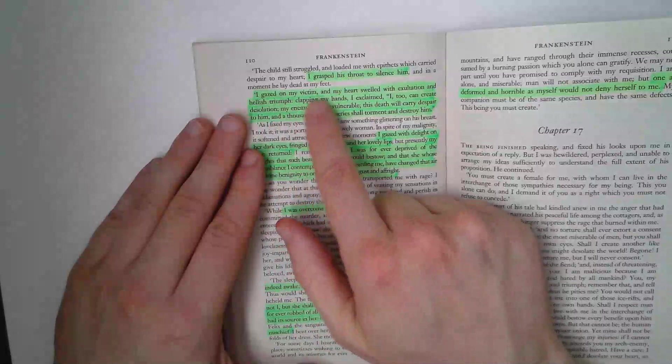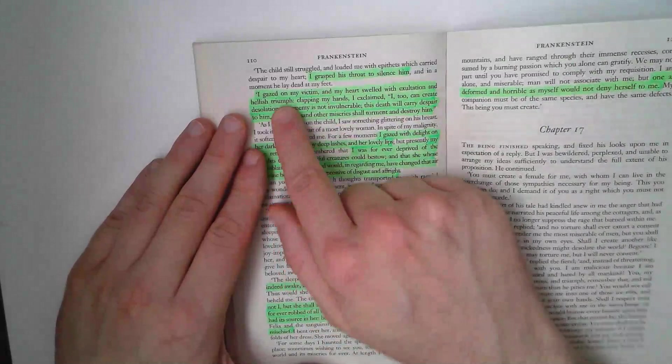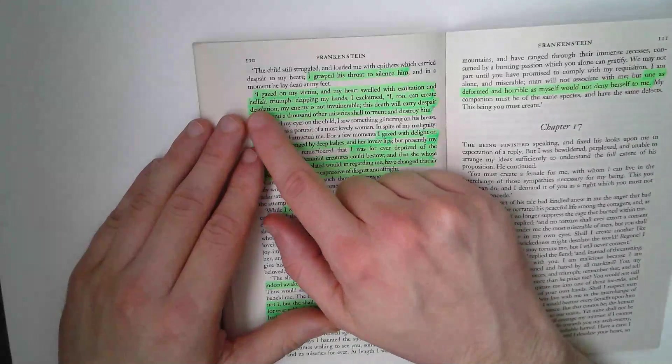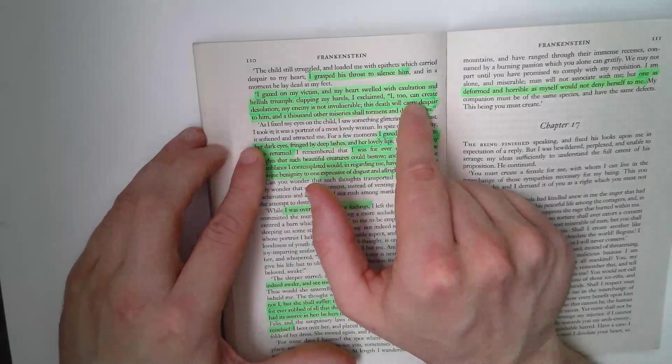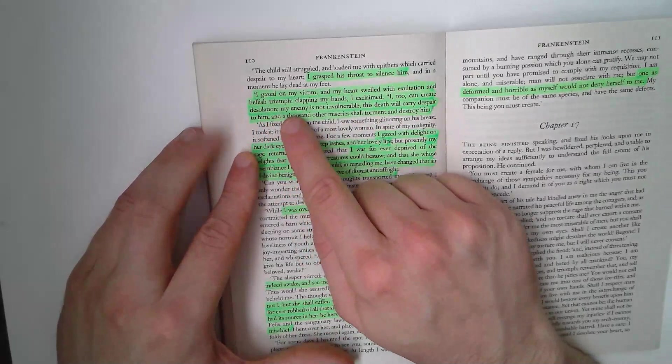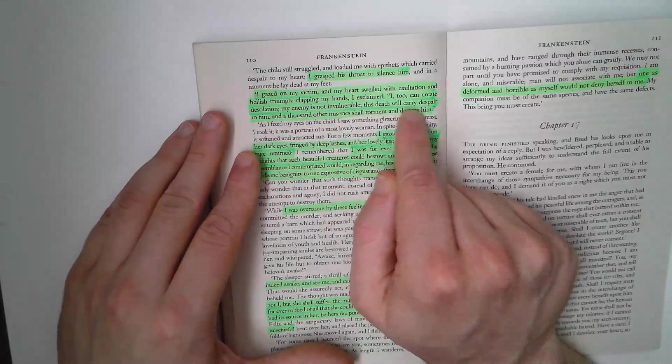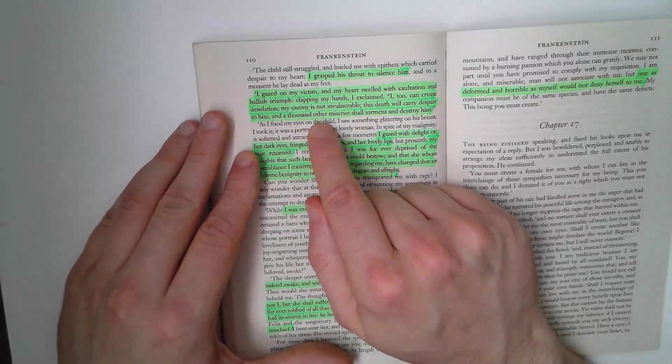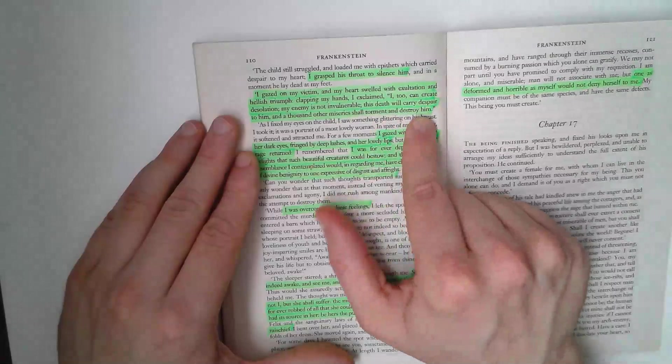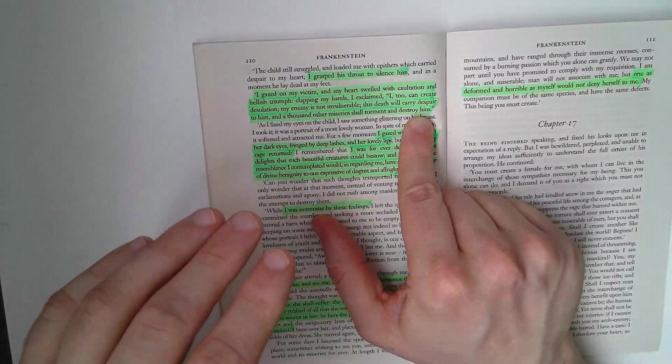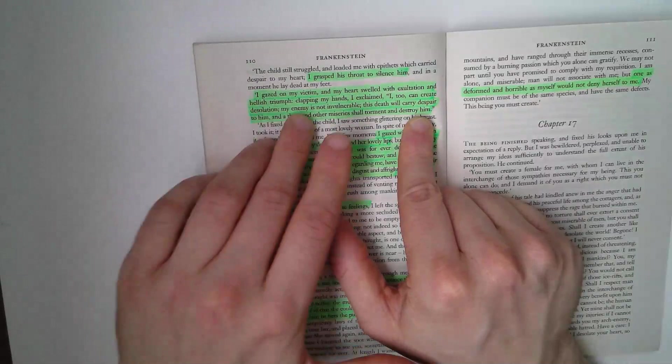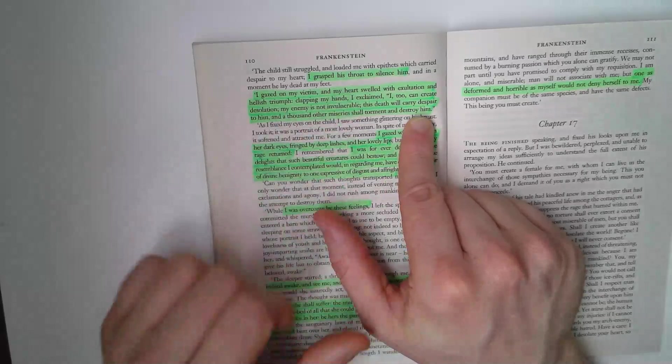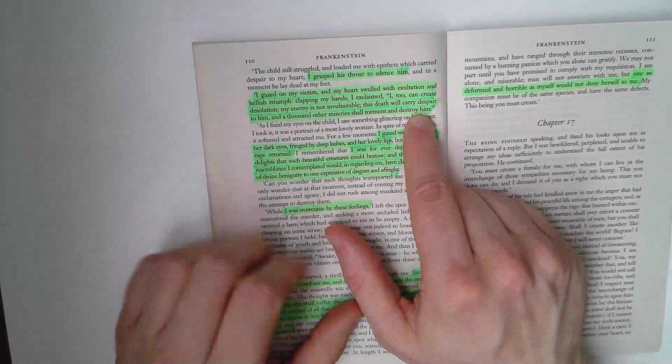I gazed on my victim, my heart swelled with exultation and hellish triumph. The creature takes triumph from this. Clapping my hands, I exclaimed, I too can create desolation, my enemy is not invulnerable, this death will carry despair to him, and a thousand other miseries shall torment and destroy him. So whatever the creature meant, he takes joy from the murder. A hellish triumph. Clapping hands, almost that childish glee the creature gets.